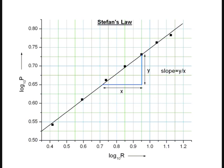Tabulate the readings. Calculate P and R. Calculate log P and log R. Plot the graph of log P against log R to get a straight line. Find the slope. If the slope is 4, Stefan's law is verified.